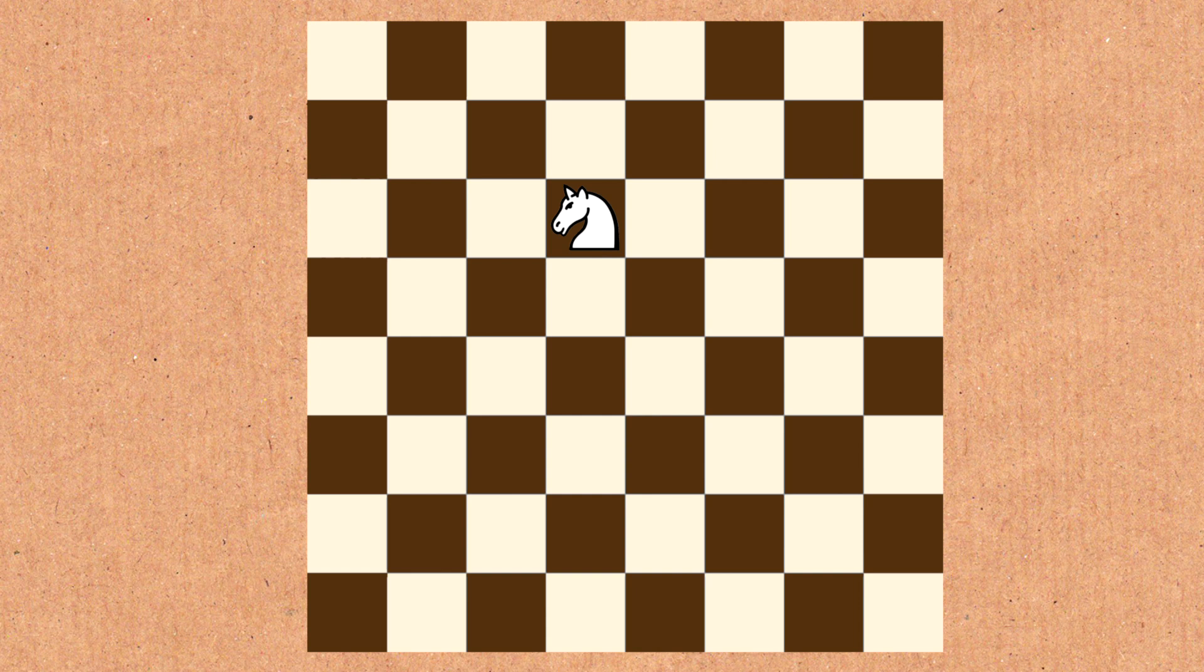We're going to focus on the knight. For those unfamiliar with the knight, it moves in a weird way. It's like an L shape, two squares by one, or one by two. And it can do this in any direction, meaning that a knight here, for example, can move to any of these squares.